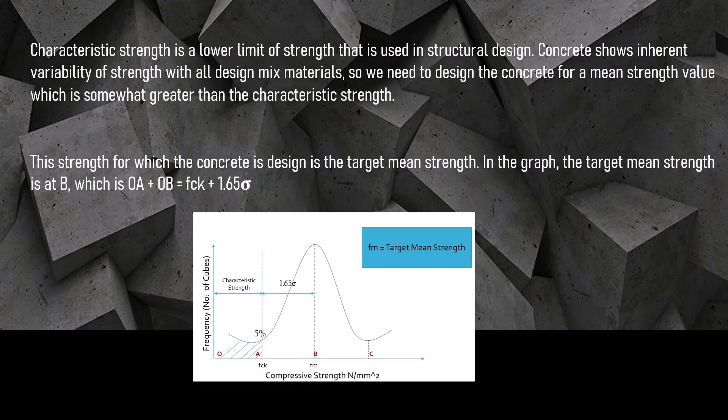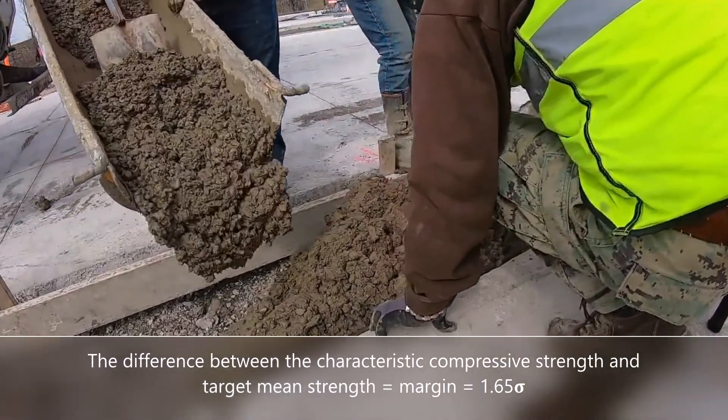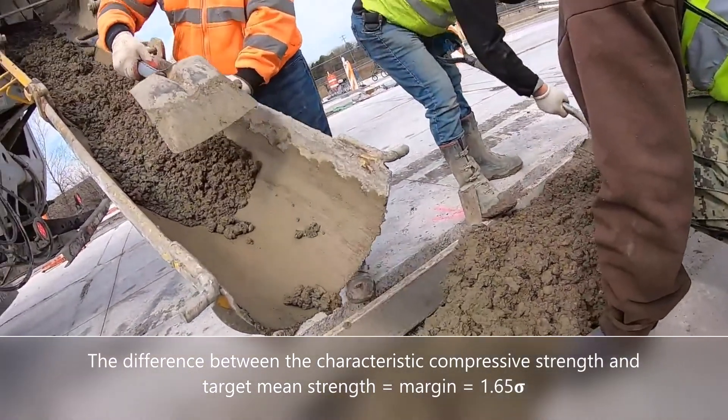And, the difference between the characteristic compressive strength and the target mean strength is given by the margin, i.e. 1.65 sigma.